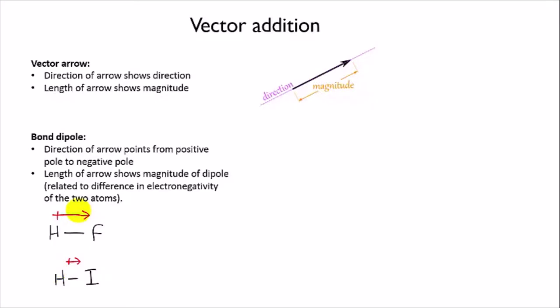When we want to find out the sum of two vectors, that is we want to find the combined effect of two forces if we're in physics or for us two dipoles, we add them together and we can do that graphically.